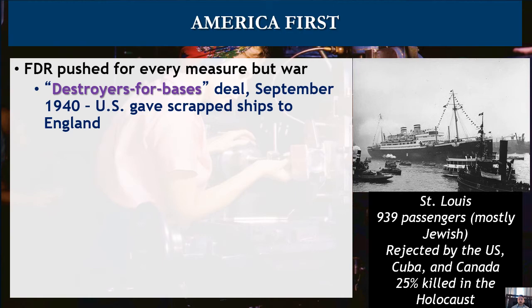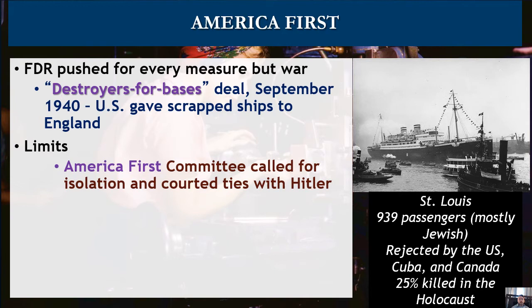The reason for the limits on FDR's behavior has to do with the American anti-war mood. A group known as the America First Committee called for isolation from the war, saying that the U.S. was better off not being involved and that we did not need to sacrifice our sons in another needless European war. In fact, the America First Committee courted ties with Hitler's regime — Nazis were at work in the U.S. spreading propaganda to keep the U.S. out of the war.